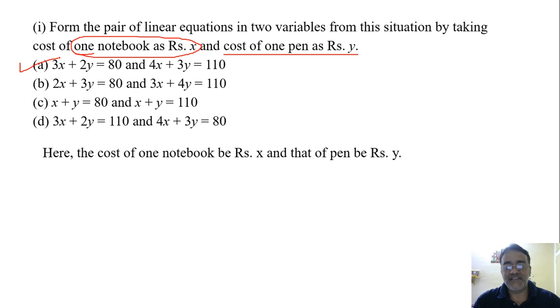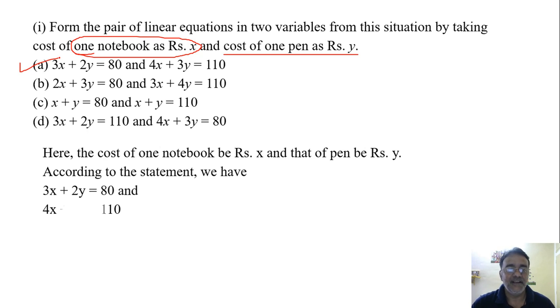The cost of one notebook is X. Cost of one pen is Rs. Y. So according to the condition we are getting 3X plus 2Y is equals to 80. And 4X plus 3Y is equals to 110.